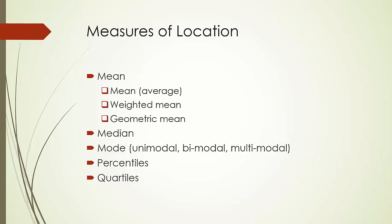Median is another important measure of central location of data. It is the value in the middle when the data are arranged in ascending order. If there are an odd number of observations, the median is the middle value. If there are an even number of observations, the median is the average of the two middle values. Mode is another measure of location, which is the value that occurs with greatest frequency. A data set may have more than one mode. If the data have exactly one mode, we say the data are unimodal. If exactly two modes, the data are bimodal. If three or more modes, they are called multimodal.